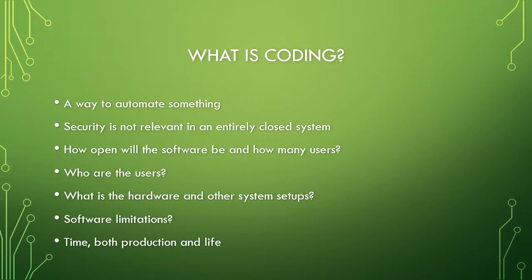So first off, what is coding? Coding is a way to automate something or make something quicker. You could do mathematical calculations, you could automate like a door system — things like this. The big thing is security is not entirely relevant in a closed system. If you have a program just running locally on your computer, there's no real need to think about security. That's where a lot of things came from to begin with.